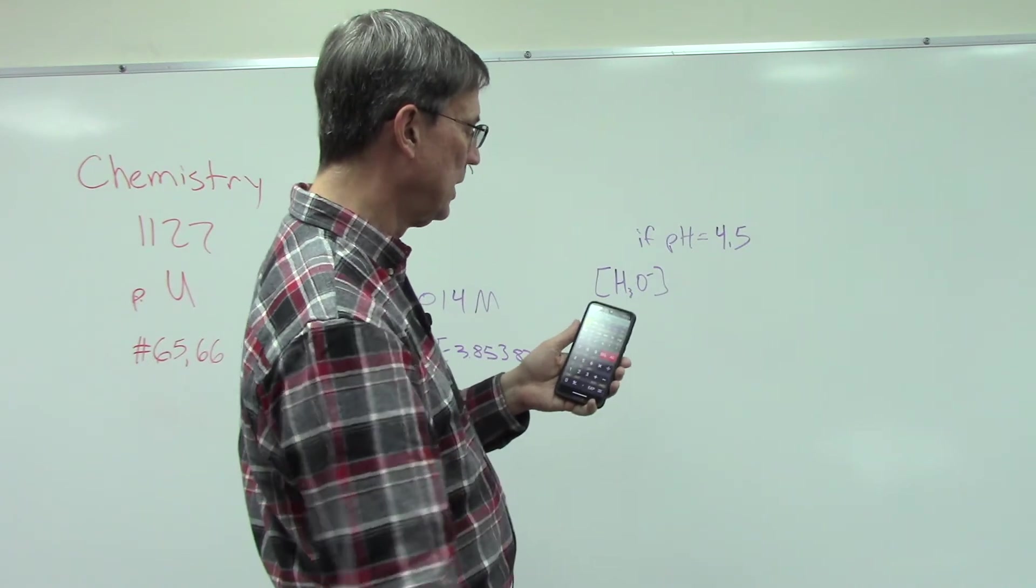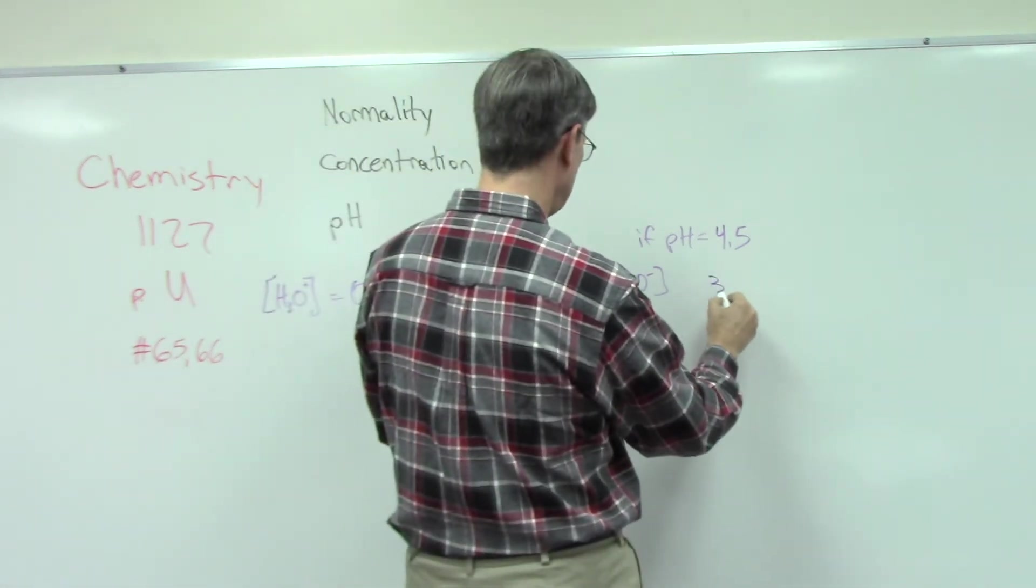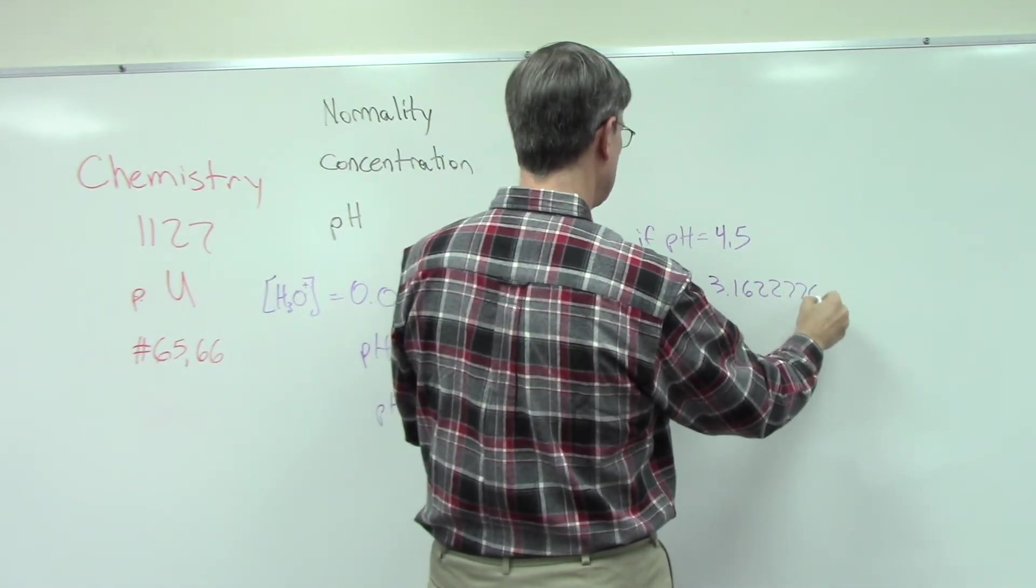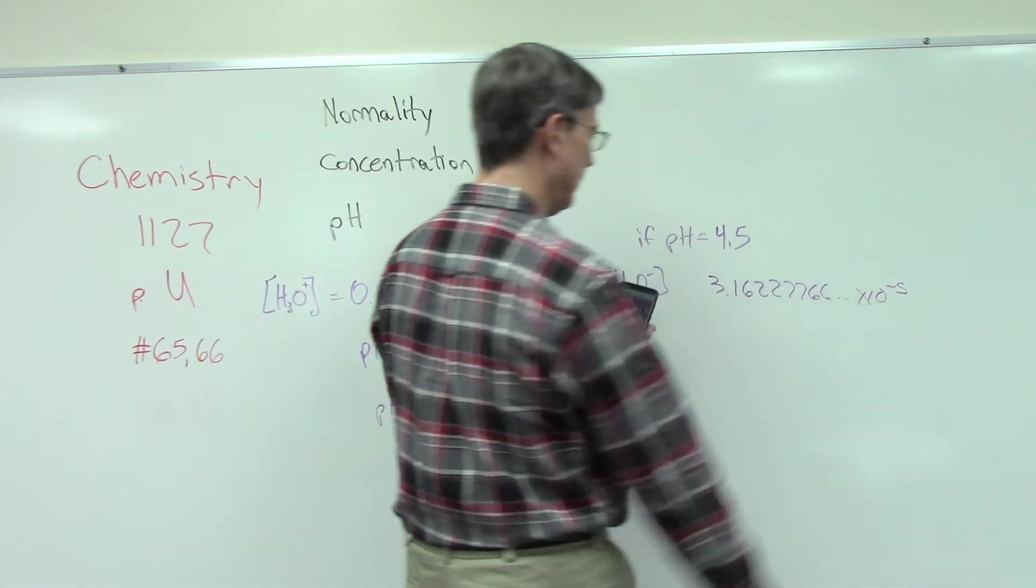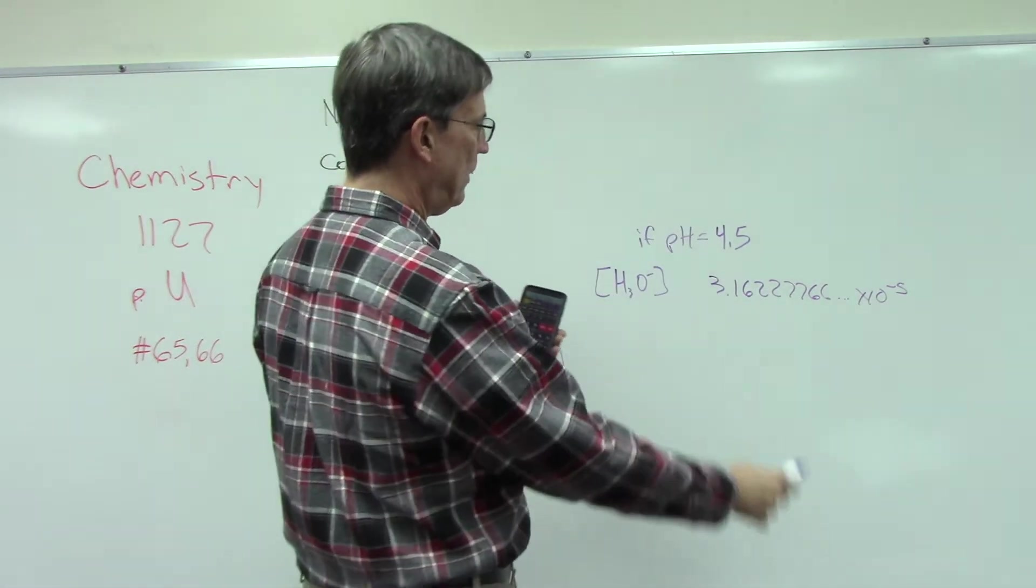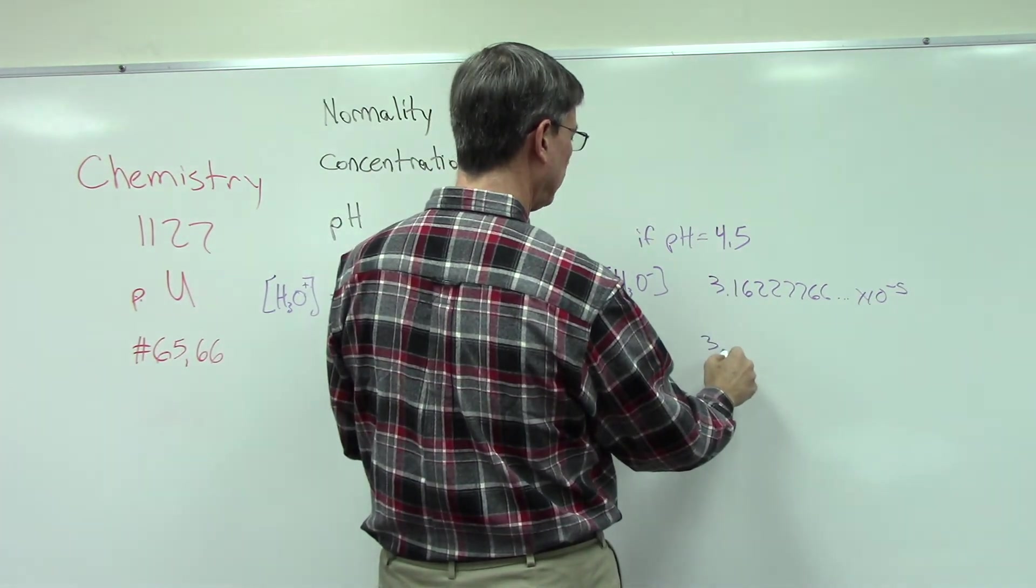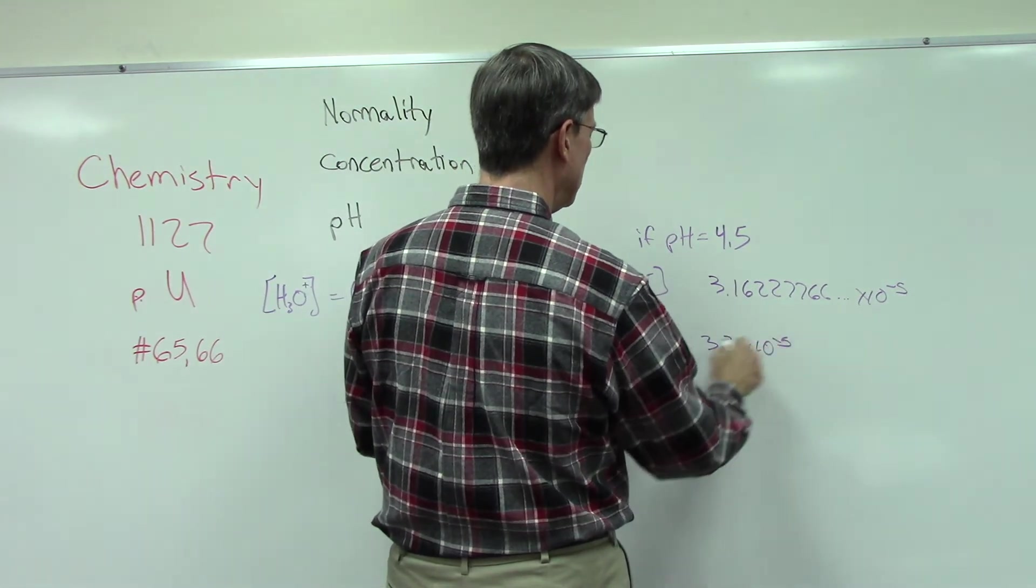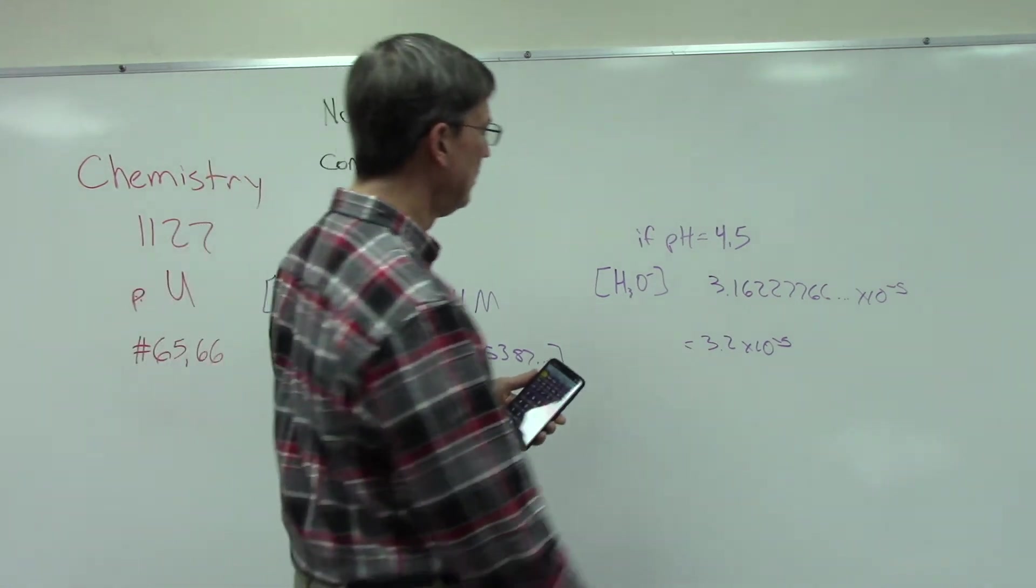For this particular problem I get 3.16227766 and so on, times 10 to the negative fifth. If I rounded that off to one decimal place it'd be 3.2 times 10 to the negative fifth. That would be the concentration - we would say that is the molarity.